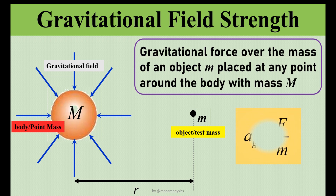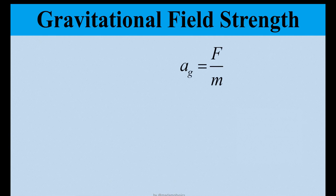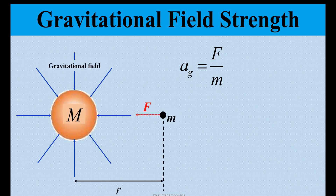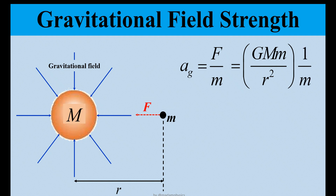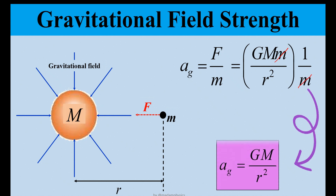Mathematically, the gravitational field strength can be represented by the symbol Ag, which equals gravitational force over test mass. Using the formula for gravitational force acting on the test mass — F equals GMm over R squared — and dividing by the mass of the test mass, and cancelling it out, we get the simplified formula: Ag equals GM over R squared.